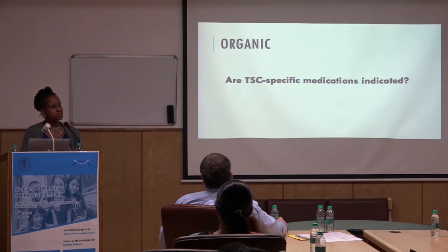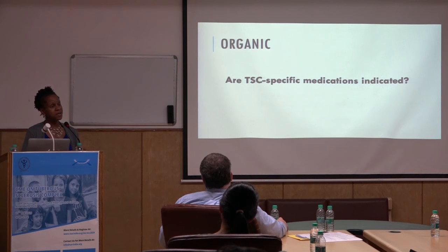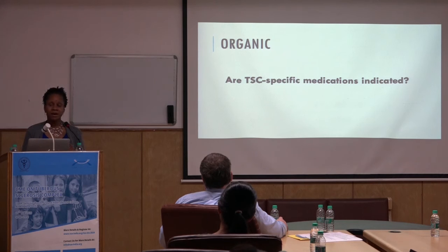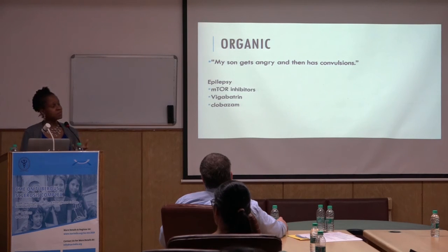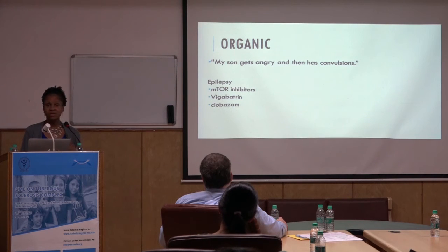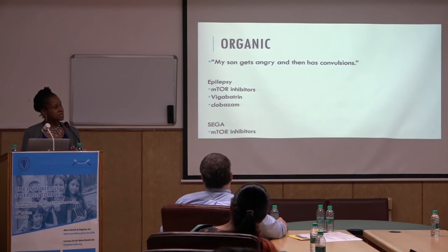For the organic approach: tuberous sclerosis, while not ideal to have, has seen advances such that there are medications that target the underlying cause. We want to make sure we're aware of whether those are indicated. For example, if my son gets angry and has compulsions, for his epilepsy there are three options that work on the underlying cause of TSC — have we considered them? Another consideration is whether he has an astrocytoma and whether an mTOR inhibitor is indicated.